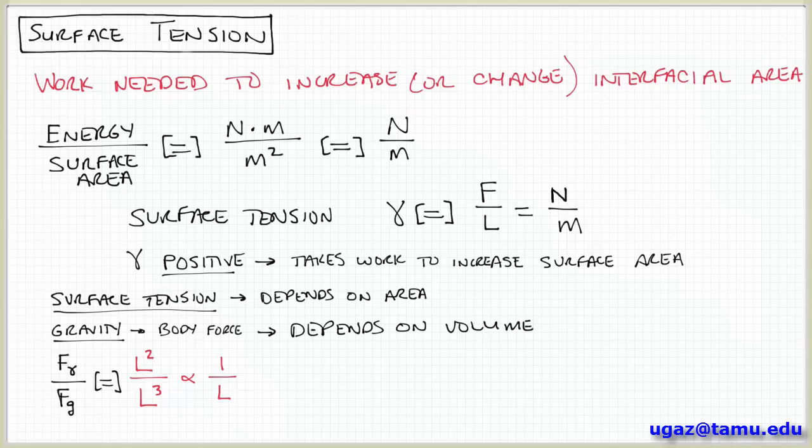So that's a very important observation, and we can see that by looking at the implications in two limits. So for large-sized objects at large length scales, the gravity force is much larger than the surface tension force. Because if L is large, this quantity is small. So gravity is much larger than the surface tension force at large length scales.